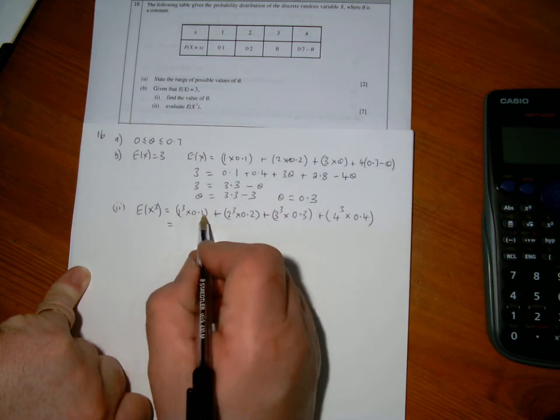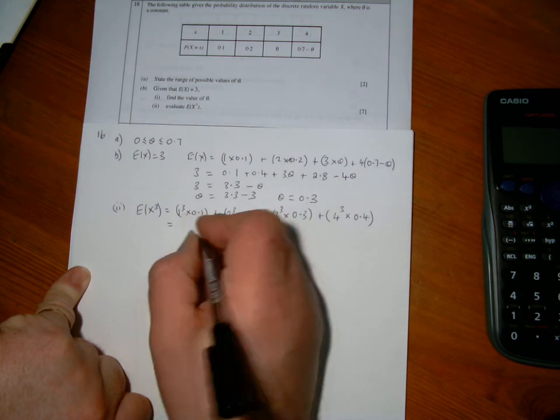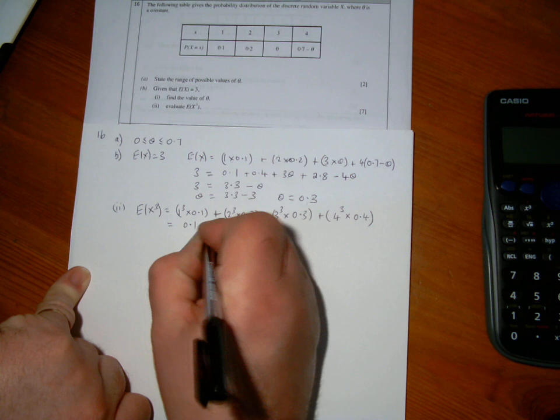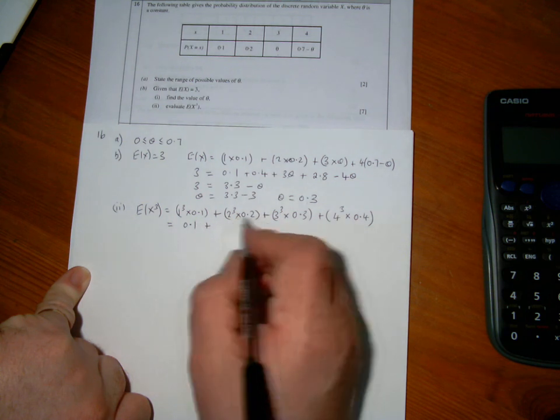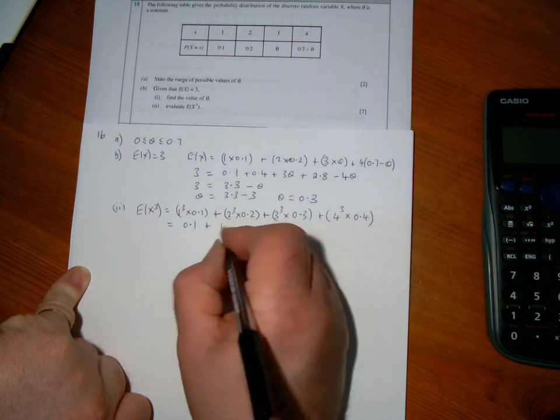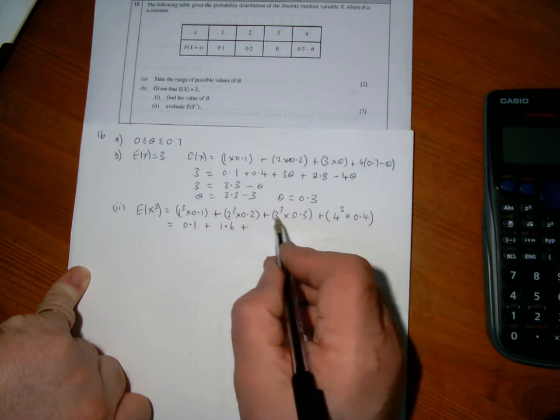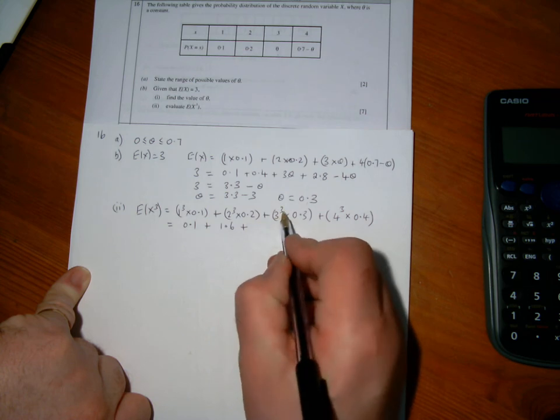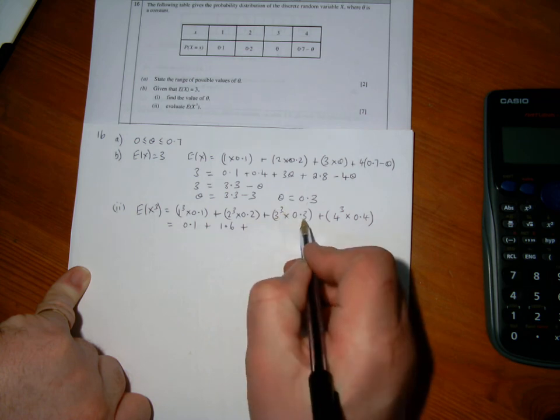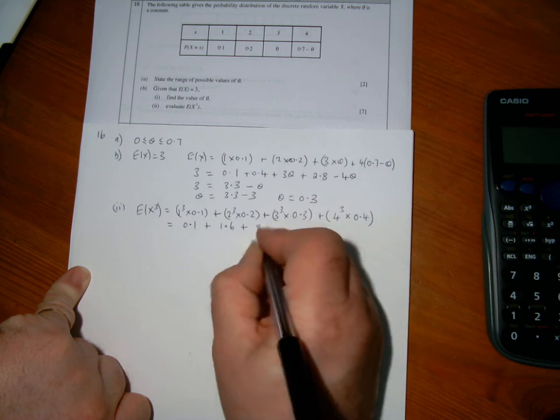And I'm working that out. 1 cubed times 0.1, 1 cubed is 1 times 0.1 is 0.1. 2 cubed is 8, 8 times 0.2 is 1.6. 3 cubed is 27, times 0.3 is 8.1.